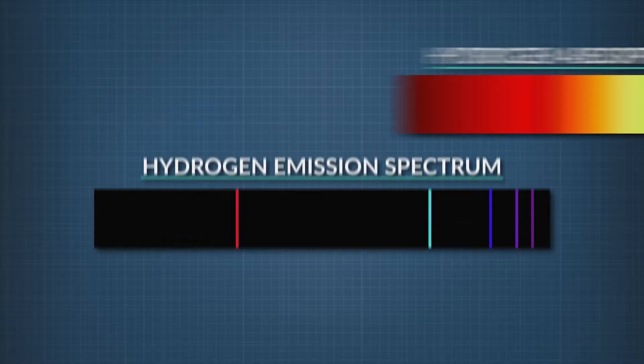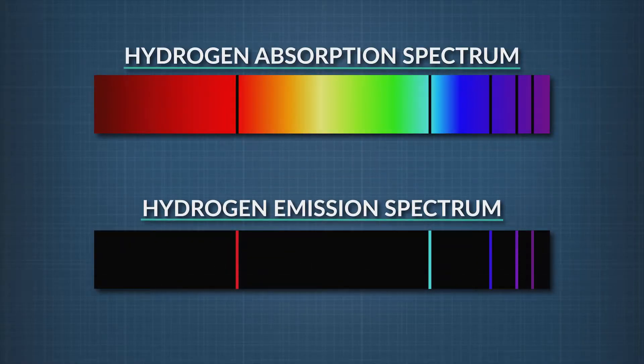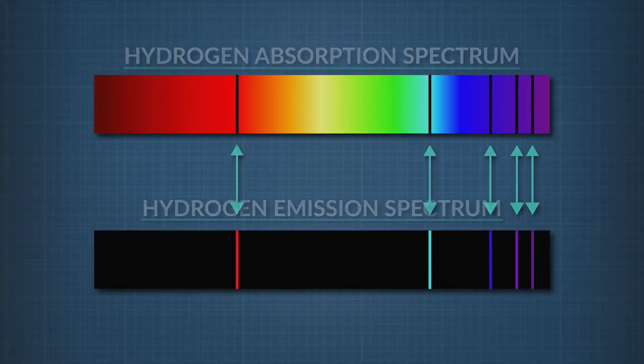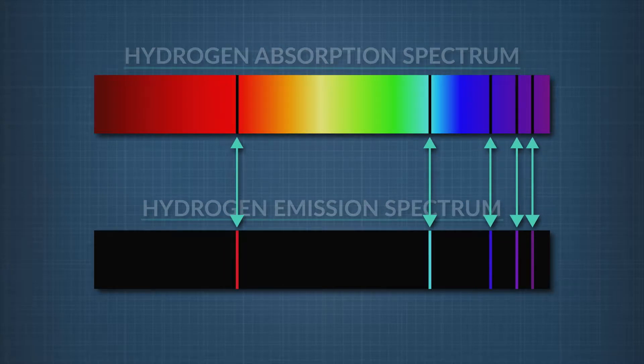Emission spectra are created when electrons fall back to lower energy levels and release photons, or packets, of light. This occurs when electrons are energized either by high temperatures or electric current. In the two spectra, see how the black lines of the absorption spectrum correspond to the color bands of the emission spectrum?